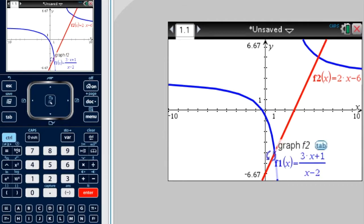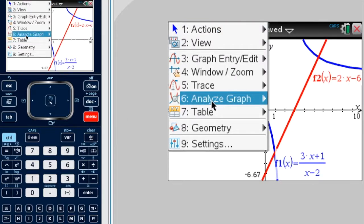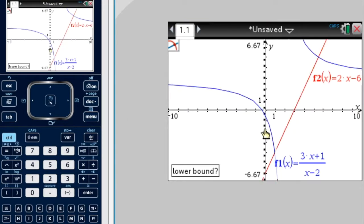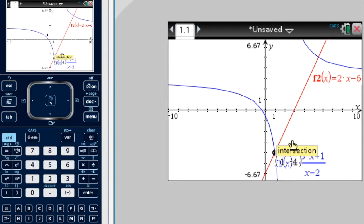Now we want to find these points of intersection here and here. So we go menu, analyze graph, intersection, lower bound and upper bound. So I'm going to move this coordinate. There's our first point of intersection, 1, negative 4.